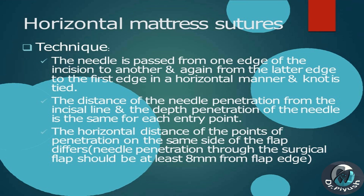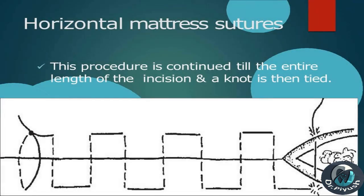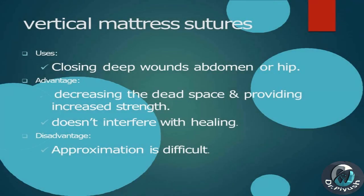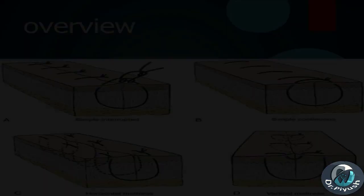The distance of needle penetration from the incision line and the depth of penetration are the same for each entry point. The horizontal distance of the points of penetration on the same side of the flap differs. Needle penetration through the surgical flap should be at least 8 mm from the flap edge. This procedure is continued until the entire length of the incision is covered, then the knot is tied. Vertical mattress sutures: similar to horizontal mattress except the depth of penetration when the needle is brought back from the second flap to the first is more superficial. Uses: closing deep wounds in the abdomen or hip. Advantages: decreases dead space, provides increased strength, does not interfere with healing. Disadvantage: approximation is difficult.